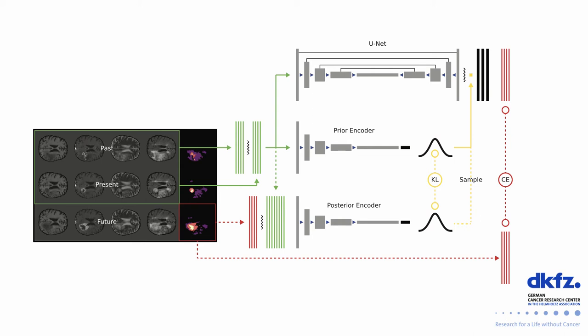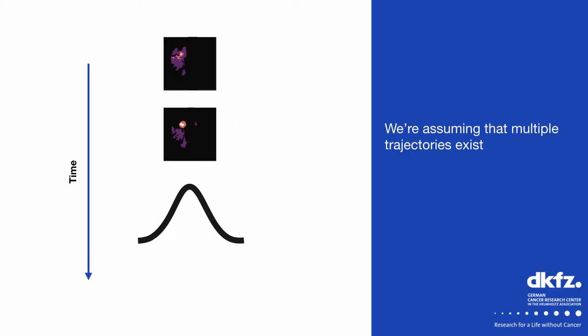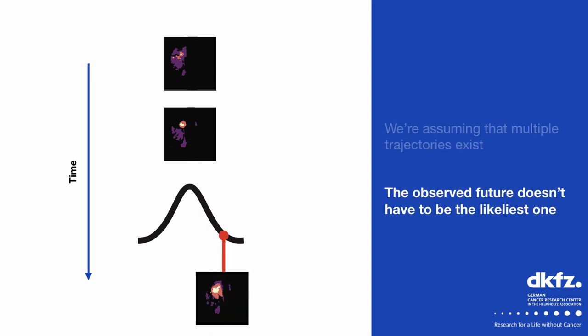This third network is called the posterior encoder, and we use a KL divergence to force the prior and posterior distributions towards each other, so that at test time the prior models meaningful variations in the segmentations. This architecture is called the probabilistic U-Net and was originally used to model annotation variations from different experts. We're now testing whether it can also capture temporal changes, assuming that multiple growth trajectories are possible and that the observed future doesn't have to be the likeliest one under the true distribution we're trying to approximate.